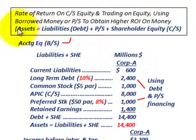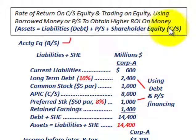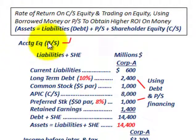Companies go out and invest in assets. They can spend cash to buy these assets, or most likely they're going to have some combination of liabilities or debt, issuing preferred stock, or issuing common stock as shareholders' equity. Really what I'm showing here is the accounting equation on the balance sheet, where assets equals liabilities plus stockholders' equity.